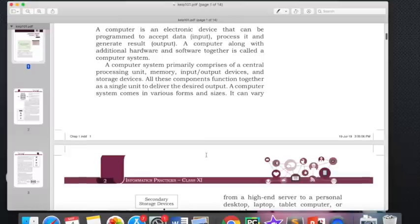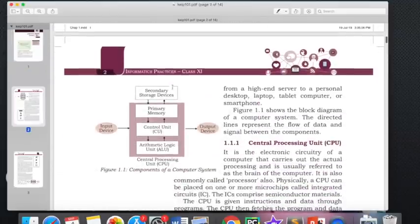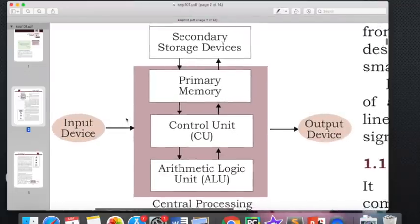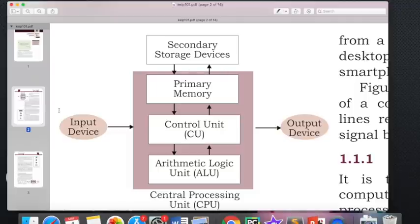Now a computer system primarily comprises of what? It has a CPU, memory unit, input-output devices and storage devices. This is a diagram that you can see here. This diagram is also called as von Neumann architecture of computers. Von Neumann is the person who developed the idea of storage into the computer and how the input, processing and output is related. This diagram represents all the basic components of computer system.